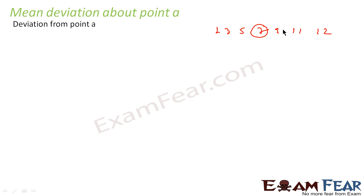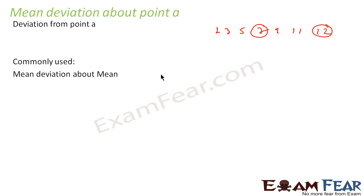You can pick 7 as a point and find mean deviation about 7, or you can pick 12 and find mean deviation about 12. Mean deviation as a word is meaningless unless you specify the point. Commonly used are mean deviation about mean and mean deviation about median — these are the two commonly used forms in statistics.